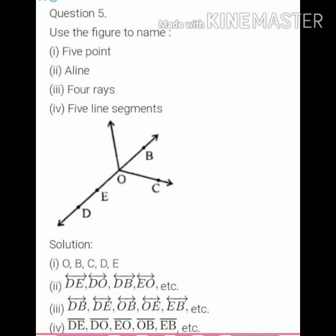Now second part, a line. A line means which we represent with arrows on both sides. So lines are DE, DO, DB, EO, etc.